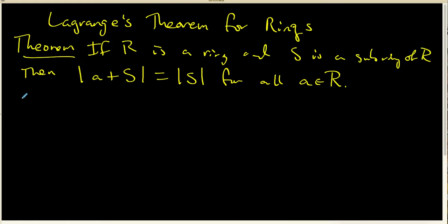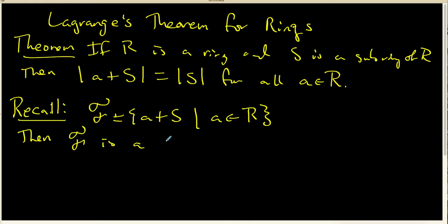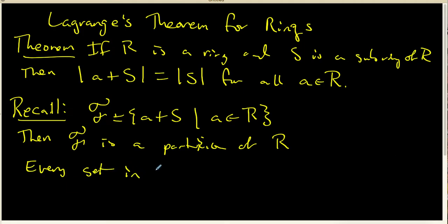I want to start by asking: what does this really mean? I also want to recall from an earlier video that if I let F be the family of left cosets for this particular subring, then the family of left cosets is a partition of the ring R. And our big theorem now says every set inside our family of left cosets has the same cardinality.